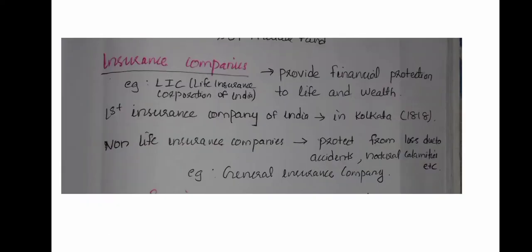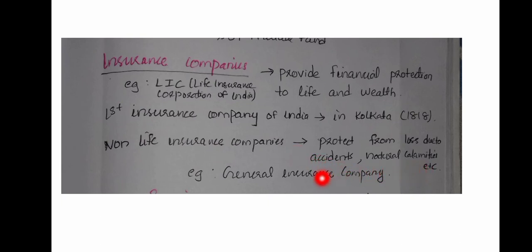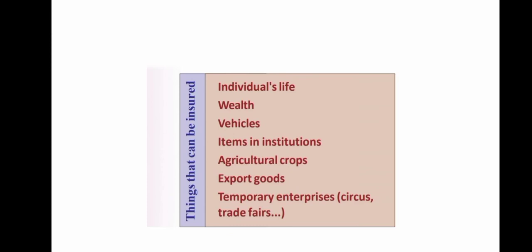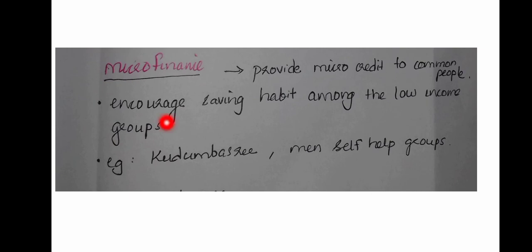Insurance companies are another important financial institution. The first insurance company in India was established in Calcutta in 1818. General insurance companies also play an important role. These companies provide various benefits through their insurance services.